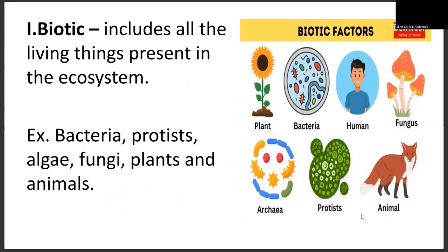For biotic, it includes all living things present in the ecosystem, such as bacteria, protists, algae, fungi, plants, and animals. As you can see in this picture, we have different types of living things or biotic factors. To name a few, we have plants, bacteria under the microscope, humans, fungus, mushroom, archaea, protists, and animals.